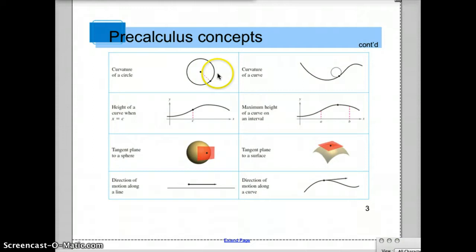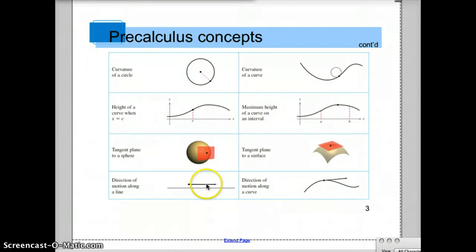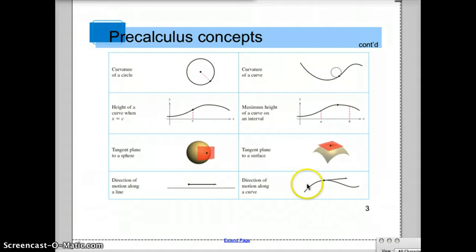Some more examples. If you want to find the curvature of a circle, we could do that without calculus. But with calculus, to find the curvature of a curve, that's what we need calculus for. Height of a curve, no problem, can do that without calculus. Maximum height on a curve between A and B, we need calculus. Tangent plane to a sphere, you can do that without calculus. Tangent plane to a surface that's curved, you need calculus. Direction of motion along a straight line, you don't need calculus for that. But if we want to find the direction of the motion along a curve, you need calculus.